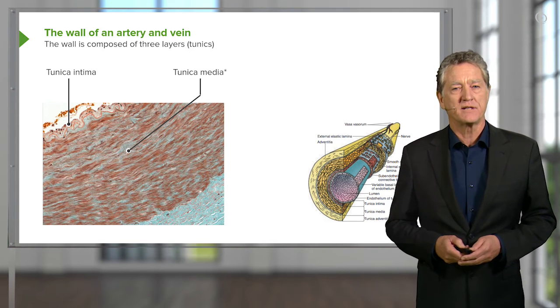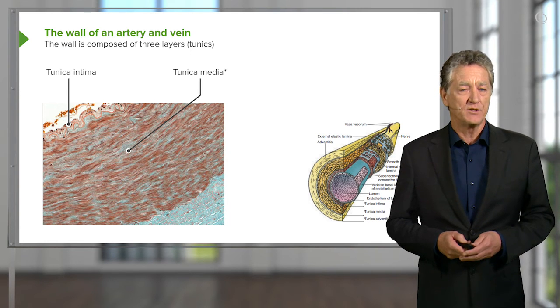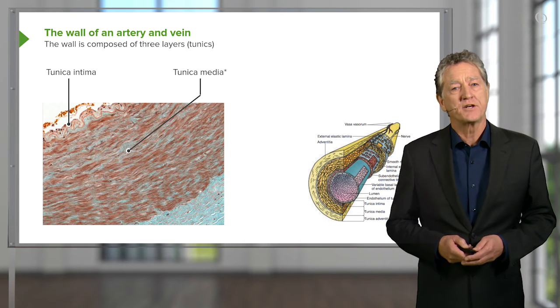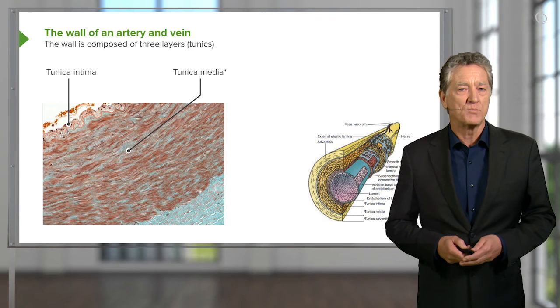So that you can perfuse your skeletal muscles with a lot more blood. So this tunica media can relax and therefore widen the lumen and allow more blood to flow through.